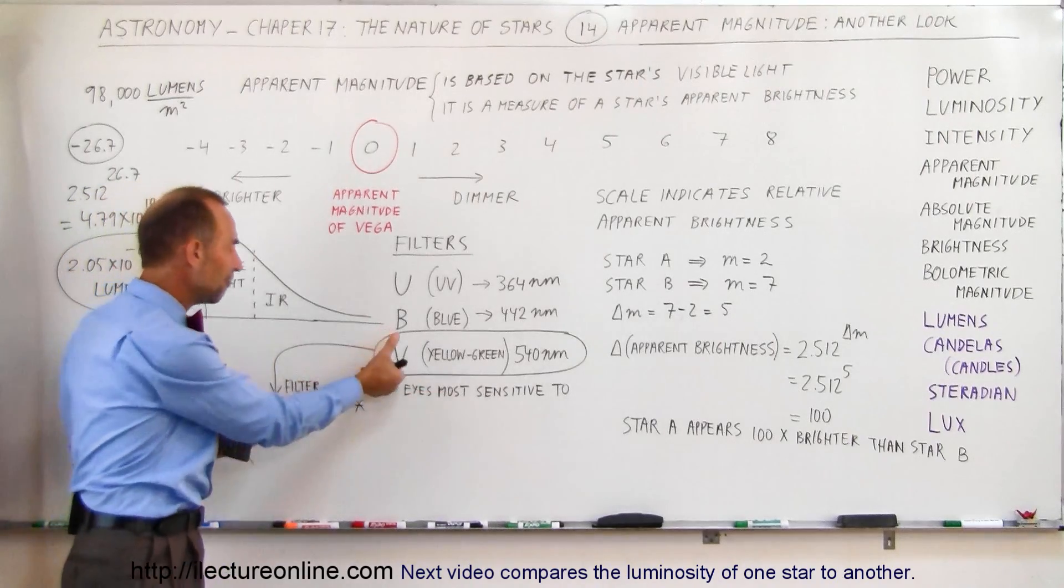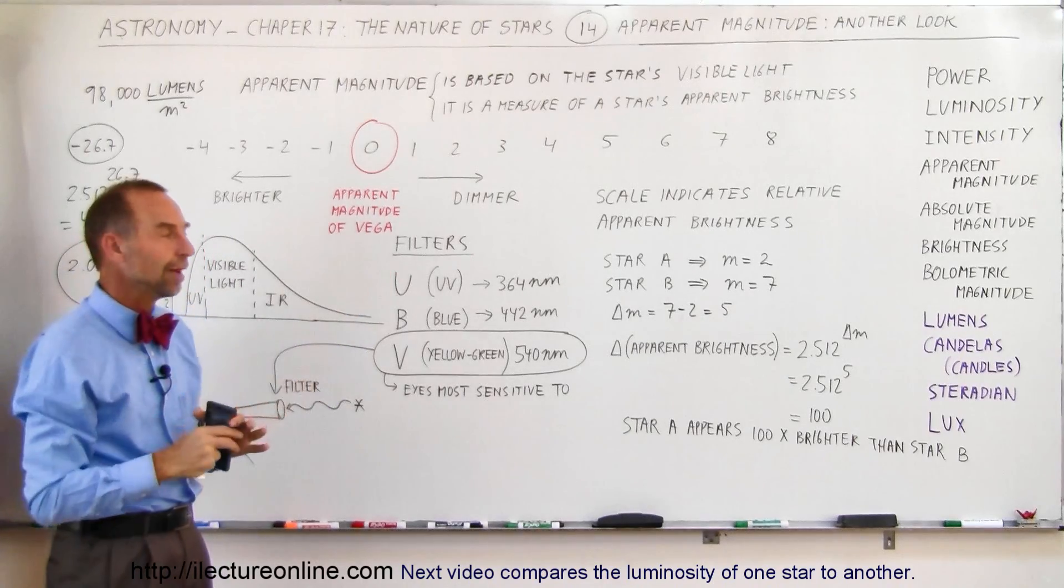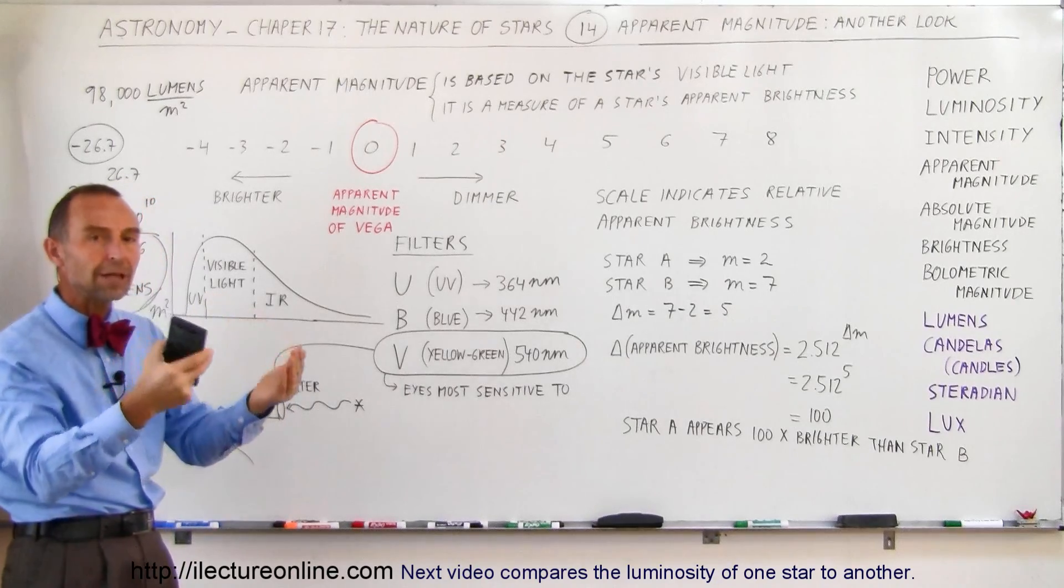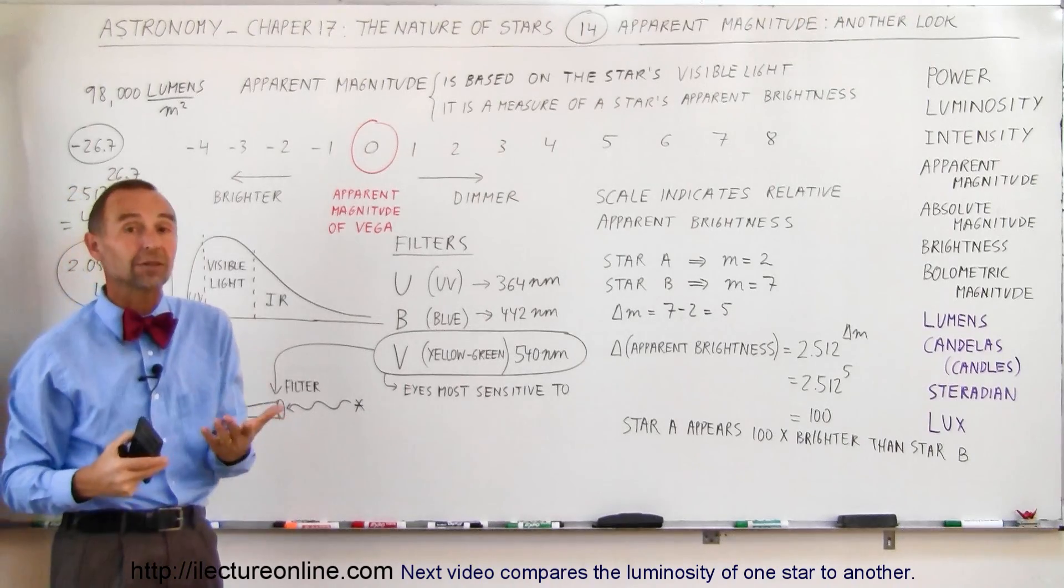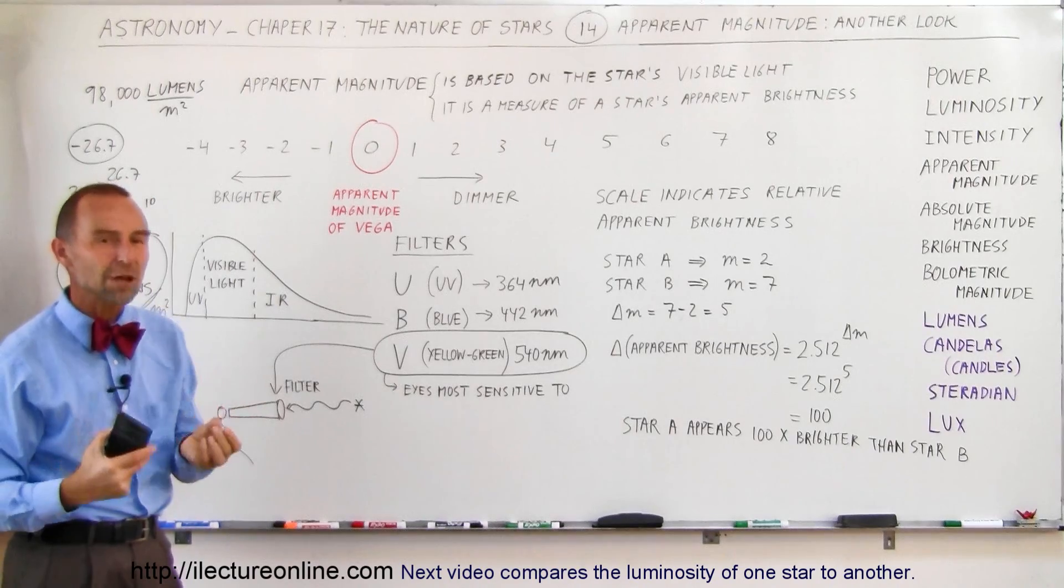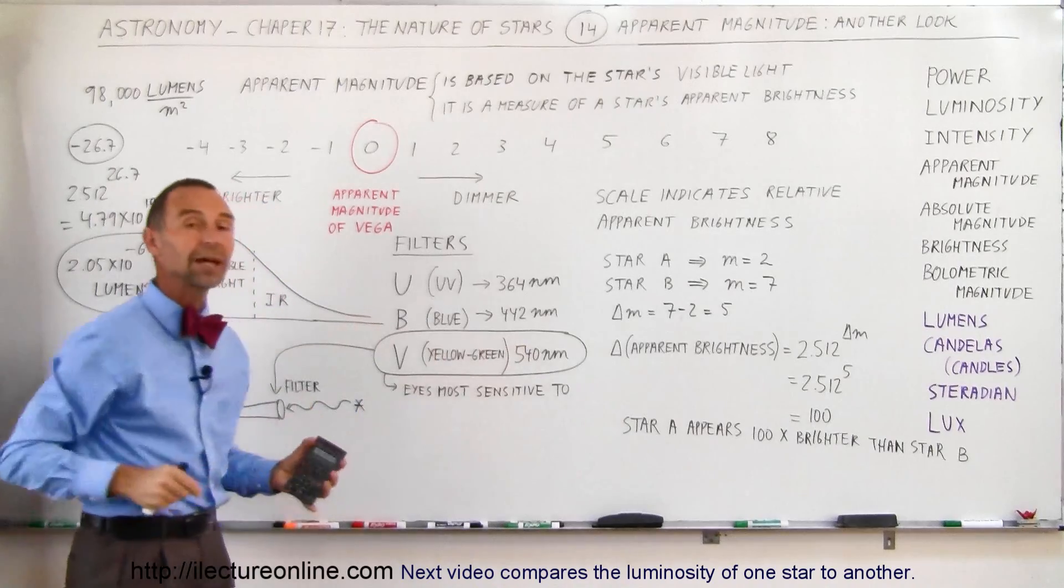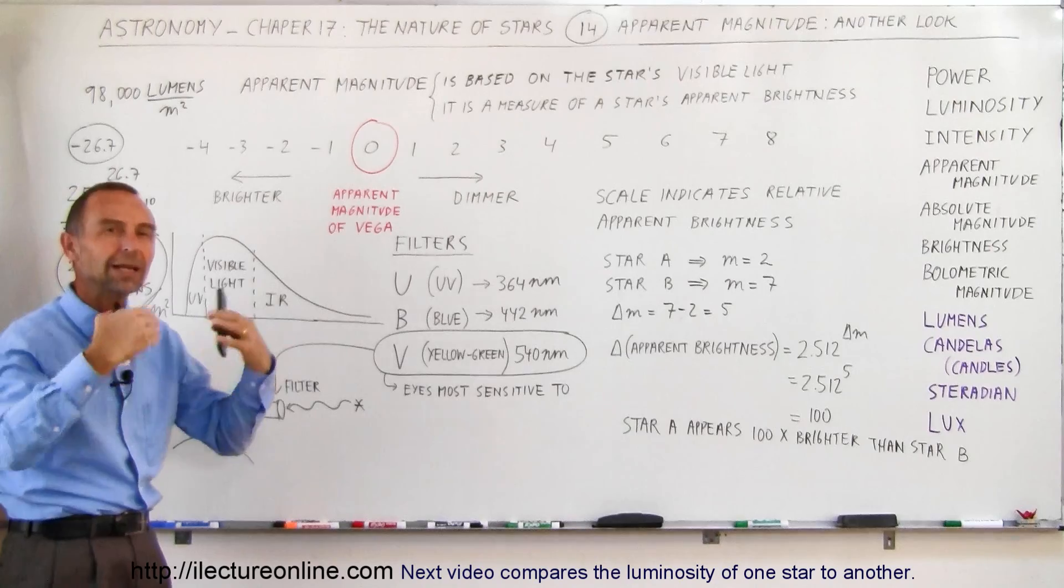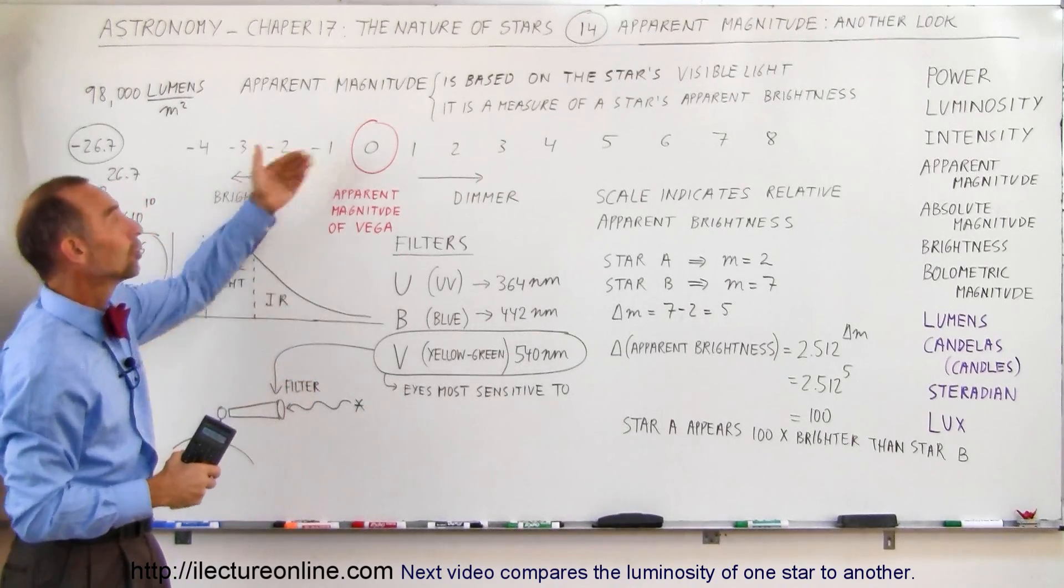So what we do is we take a V filter, put it there, so therefore we allow predominantly the visible light to come through and very little UV or very little infrared to come through and then we measure the amount of lumens from that particular object and from that we figure out the apparent brightness. And from the apparent brightness, we can then figure out the apparent magnitude. So that's how we measure the apparent brightness of a star. We use a special filter that allows visible light to pass through, holds back the UV and the infrared, and then we measure how bright it appears with a measure apparatus and then we convert that to an apparent magnitude.